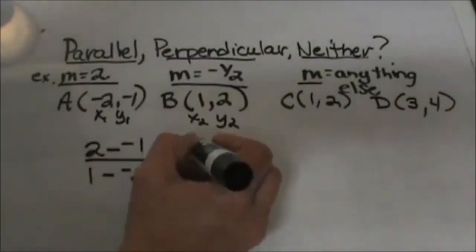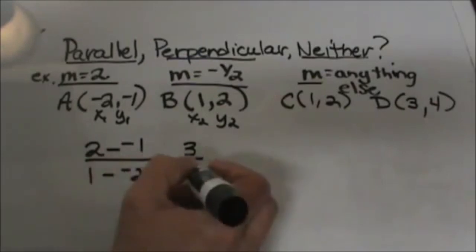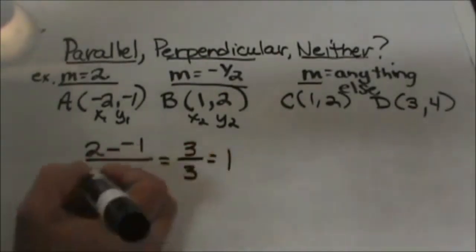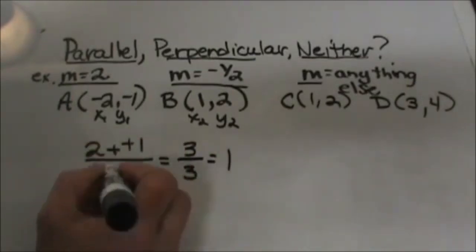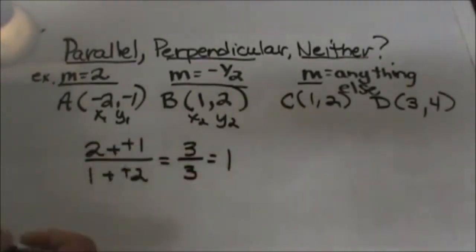which leaves me with a positive 3 over 3, which is equal to 1. So double negatives we add and that's why it's 3 over 3.